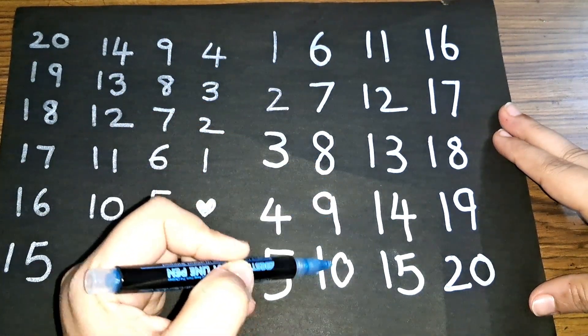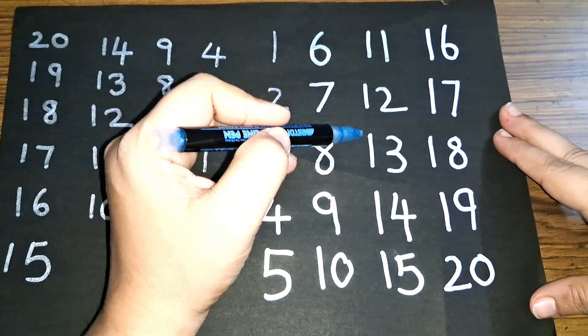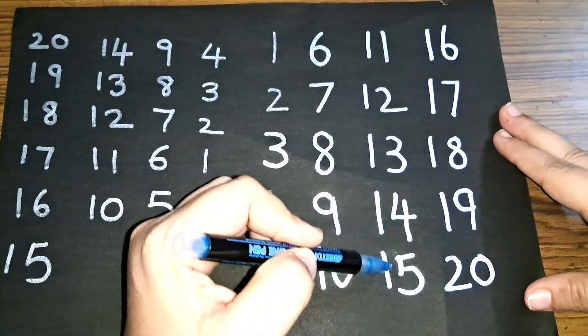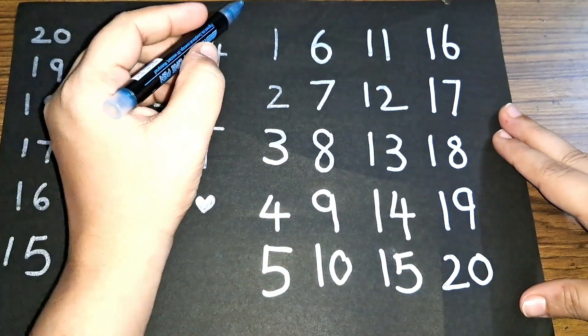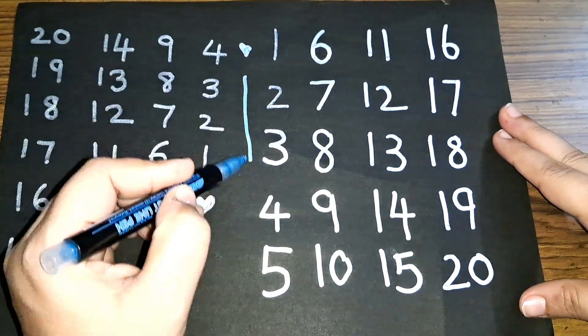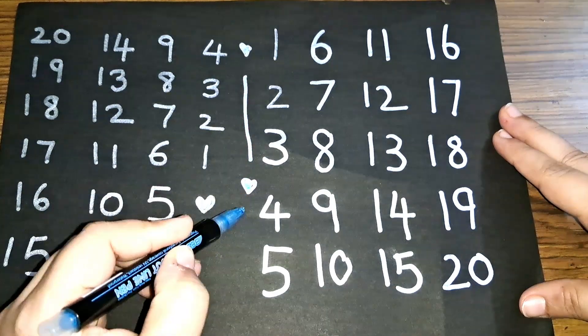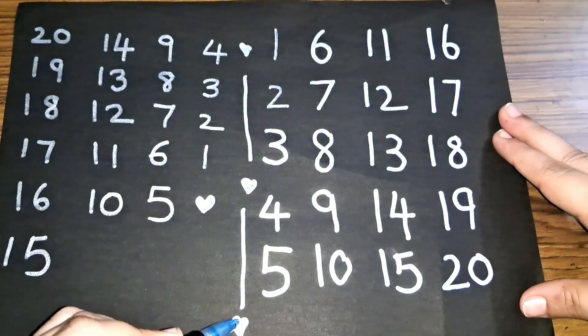1, 2, 3, 4, 5, 6, 7, 8, 9, 10, 11, 12, 13, 14, 15, 16, 17, 18, 19, 20. This is forward counting.